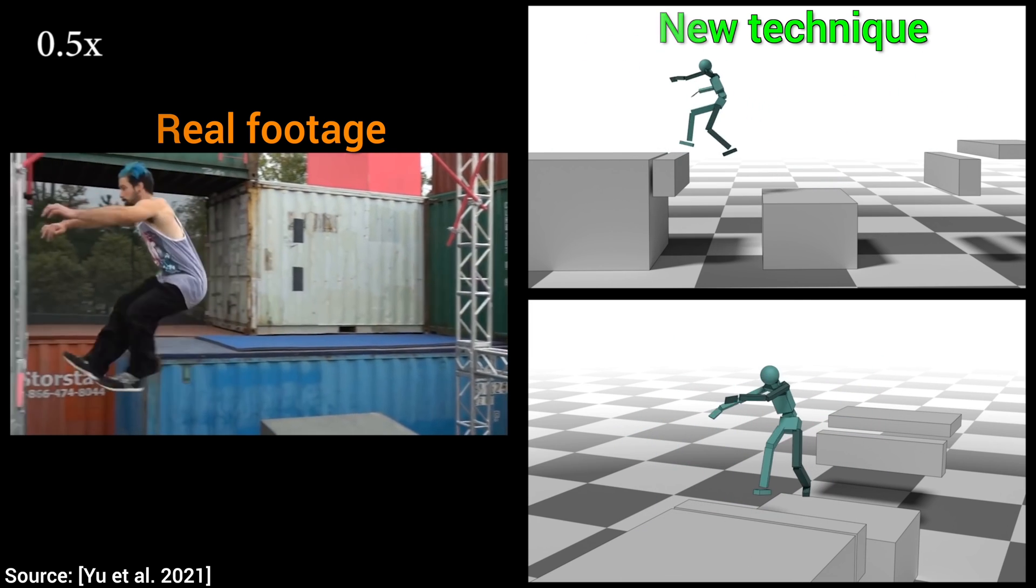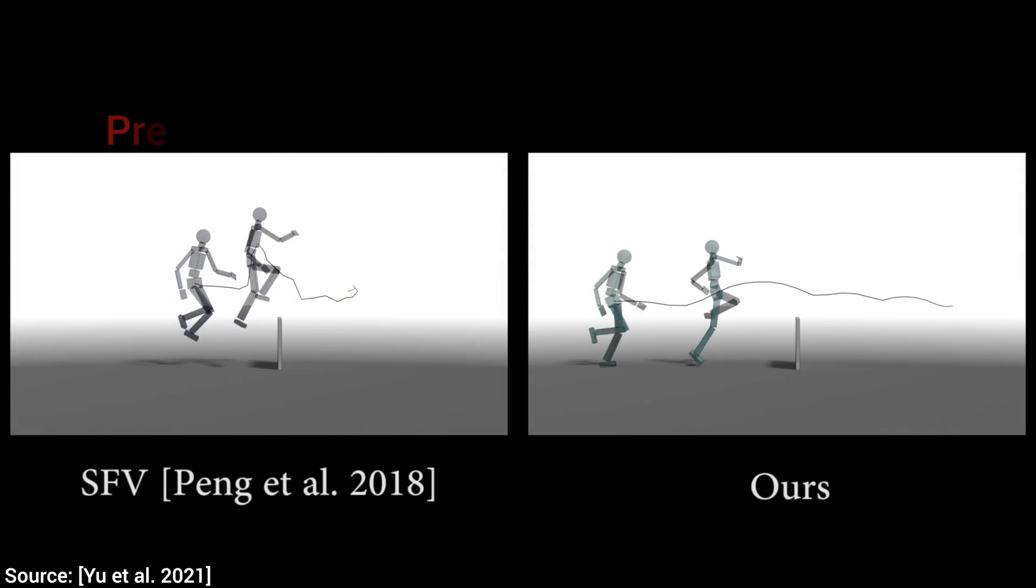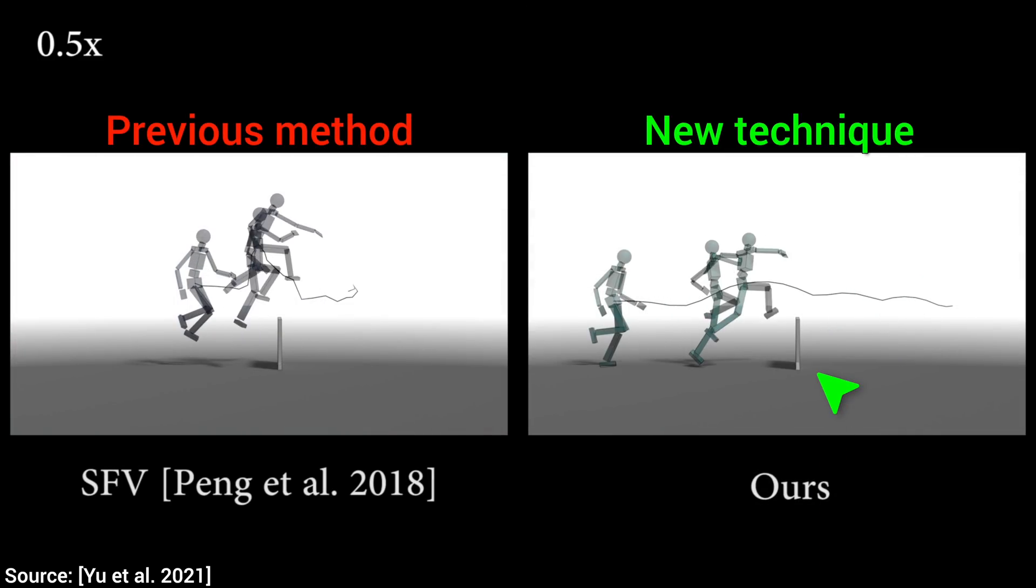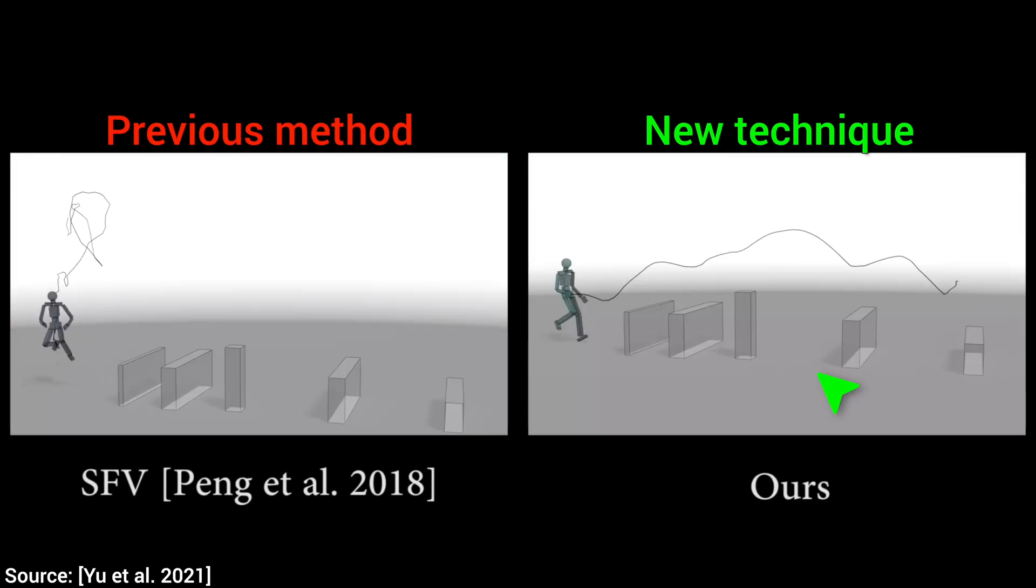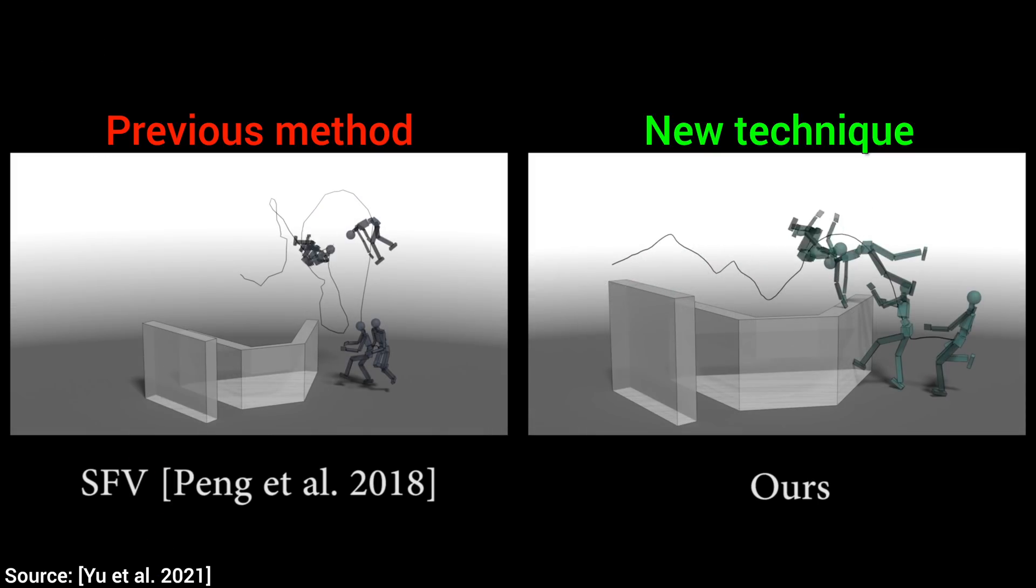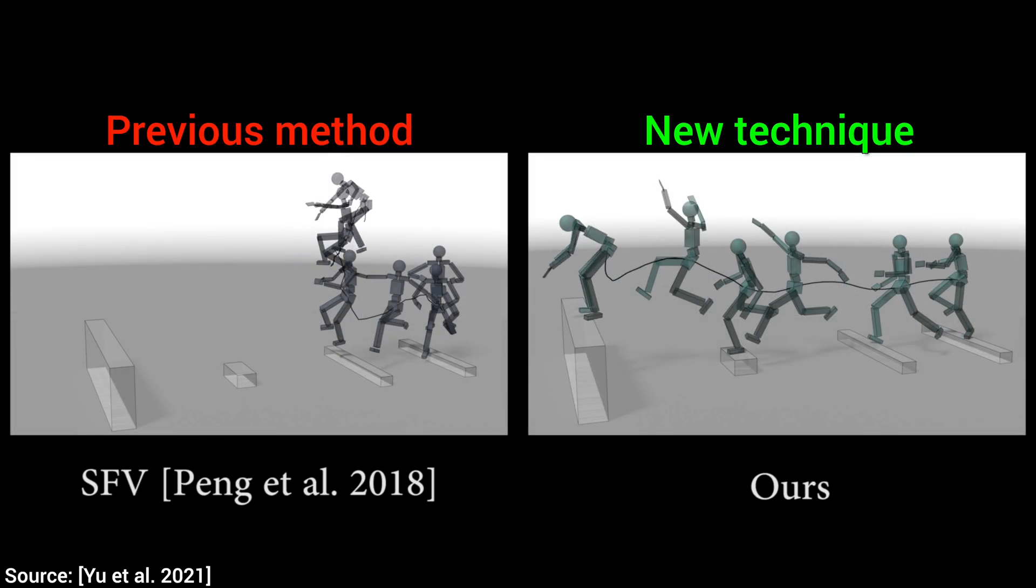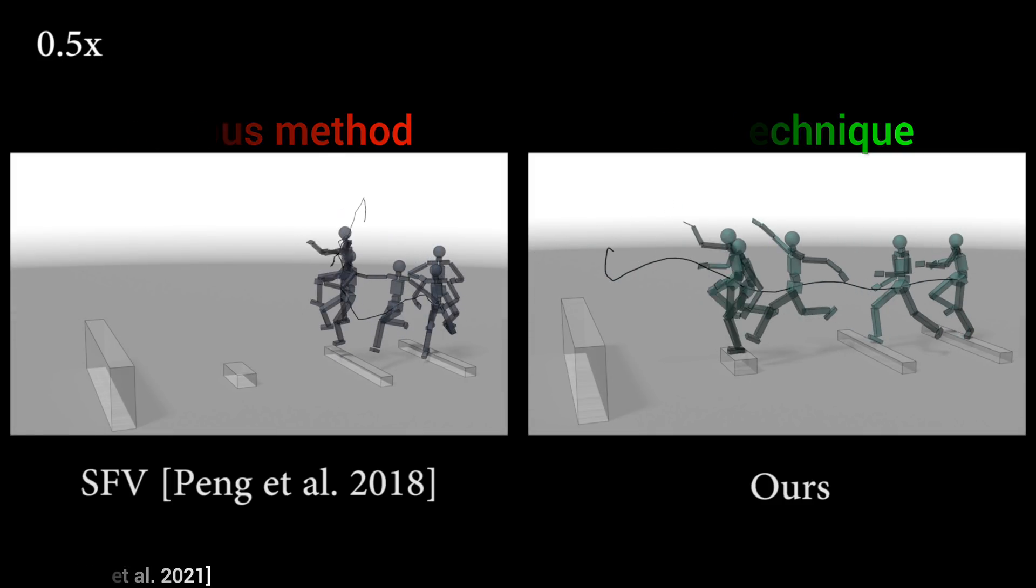And if we add up all of these together, we get this. This truly is a sight to behold. Look, so much improvement, just one more paper down the line. And just imagine what we will be able to do a couple more papers down the line. Well, what do you think? Let me know in the comments below!